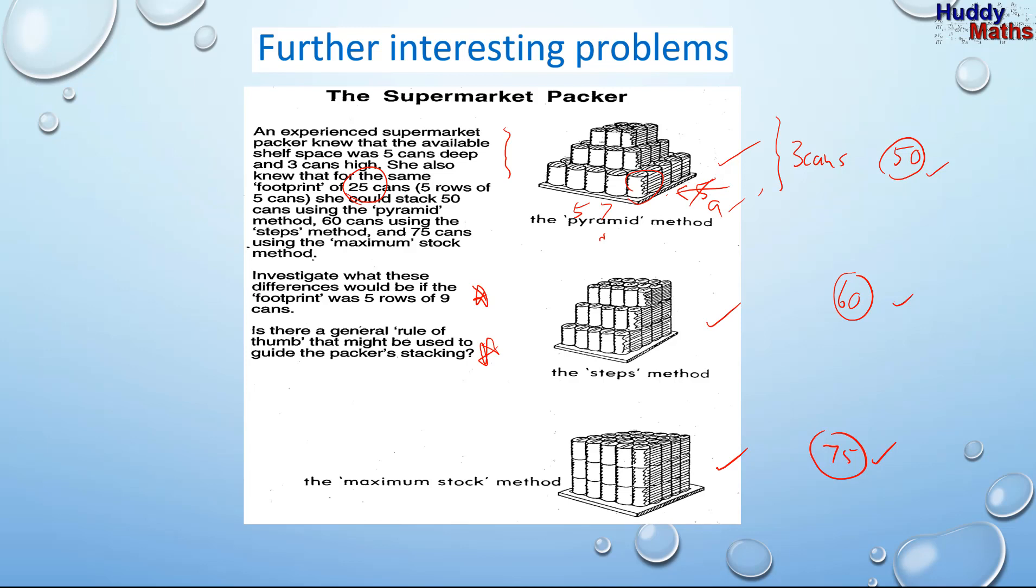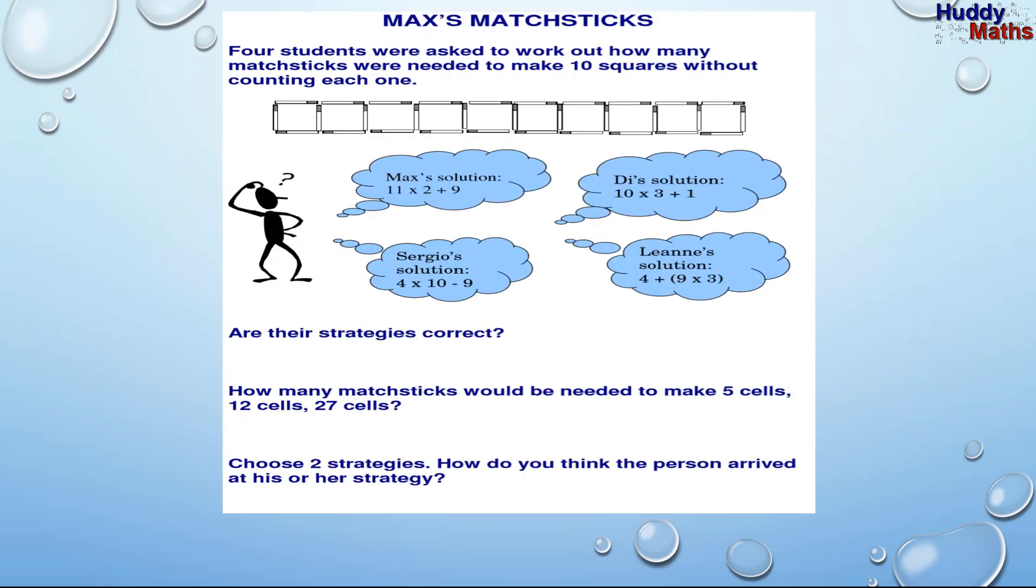Can you see a way of working out how many cans you can stack with different footprints without going through and working out each one? Is there a pattern or a rule that this can stacking would follow? So, if I came to you and said, look, I want a 5 by 12, you would say, this is the number of cans that you require. Okay. And you could see a pattern or a rule. Okay. That's getting fairly challenging. So, work with your teacher and other students with this one. And let's have a look at another interesting problem.